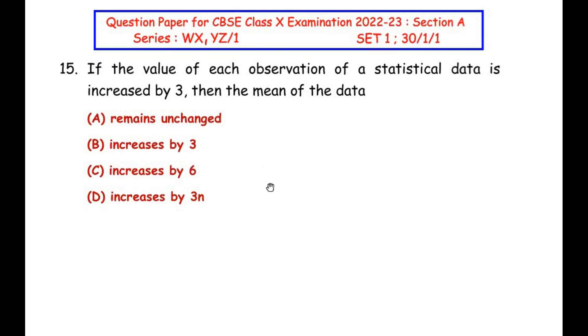The 15th question is from the statistics chapter. If the value of each observation of a statistical data is increased by 3, then the mean of the data—so we have to check whether it remains unchanged or increases by 3 or 6 or increases by 3n.